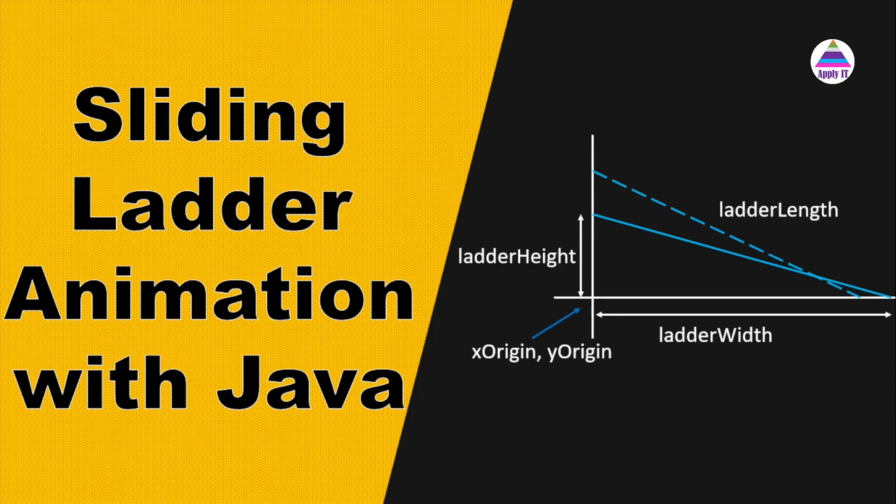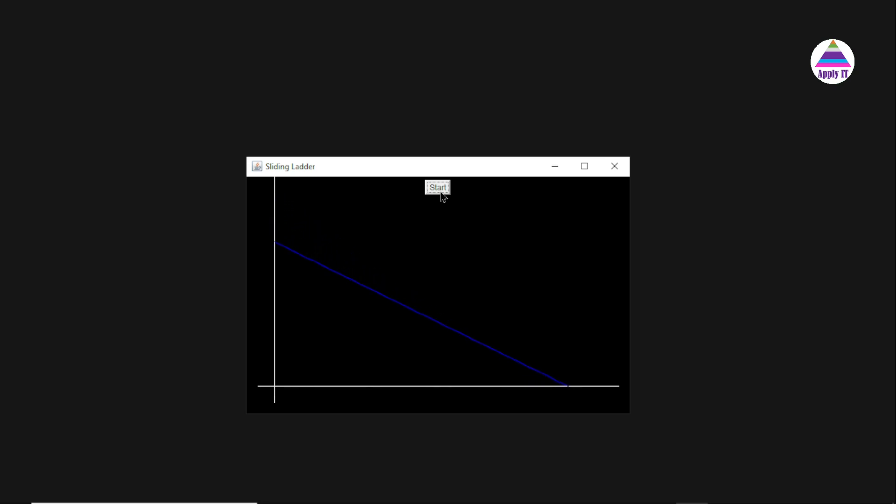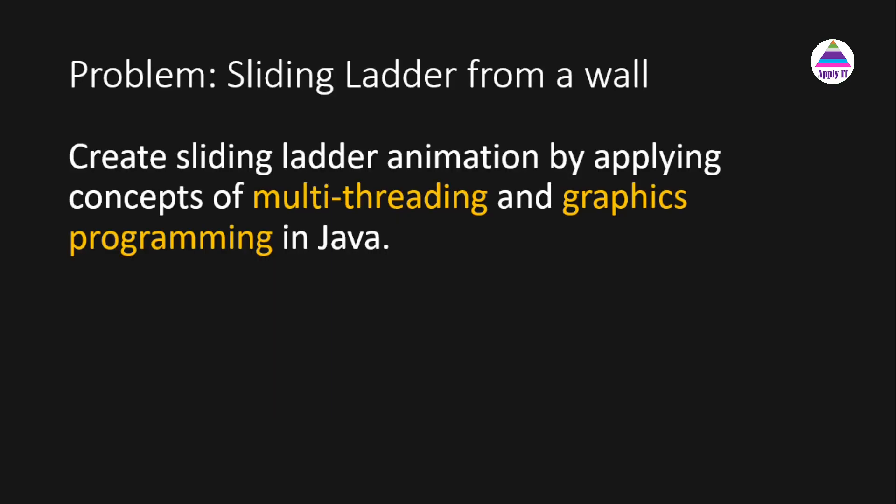In this video we are going to create a sliding ladder animation with Java. The GUI frame has a Start button. When clicked, the ladder starts sliding, initially leaning at the wall. When it becomes horizontal or parallel to the ground surface it will stop sliding.